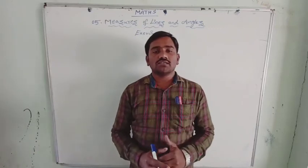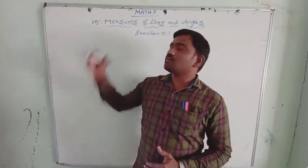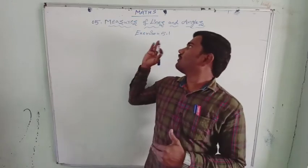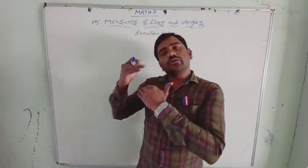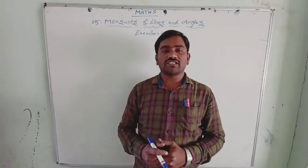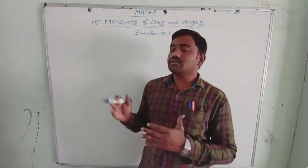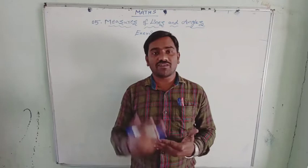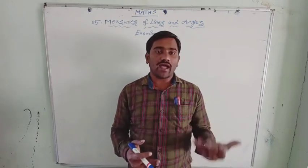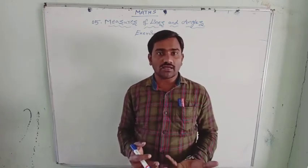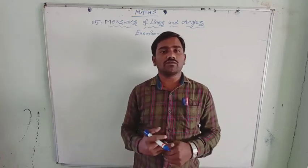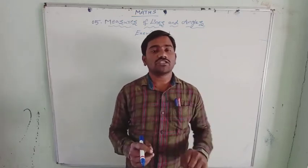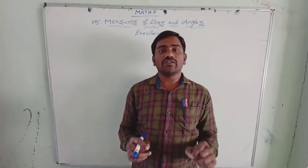Hi children, today you are going to learn sixth class, fifth chapter that is measures of lines and angles. Before you learn this chapter's exercises, you have to learn what are lines, how many types of lines are there, and what about angles, how many types of angles are there, about corresponding angles and transversal angles. You have to see that video, that video link I will keep in the description. Please watch that video then come to this Exercise 5.1.